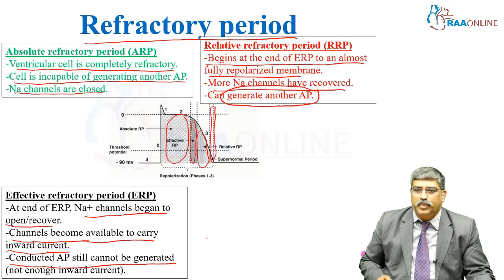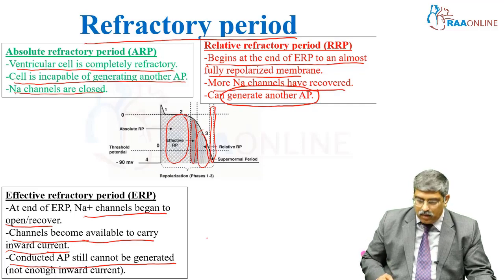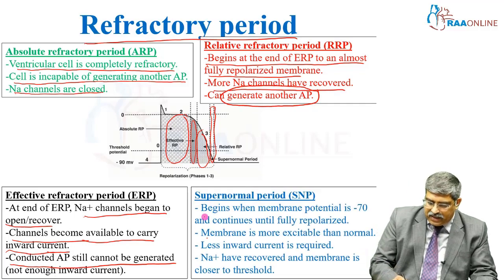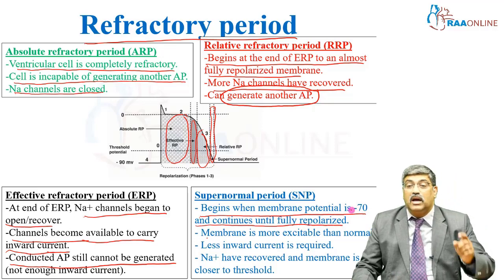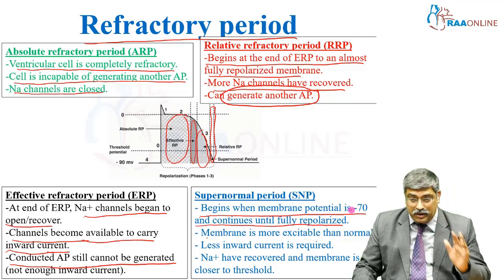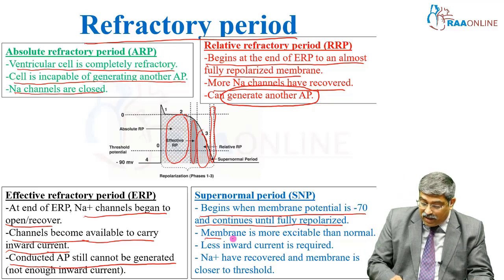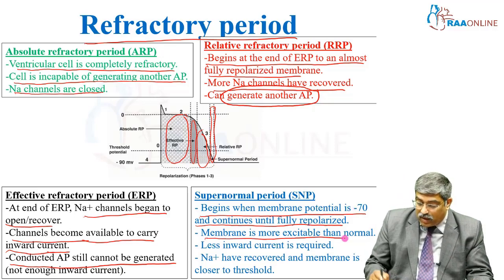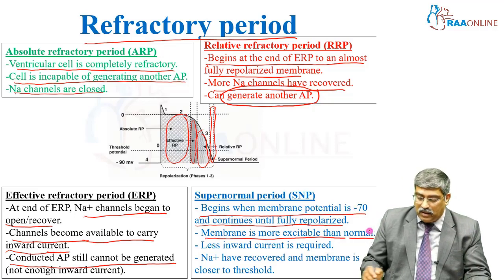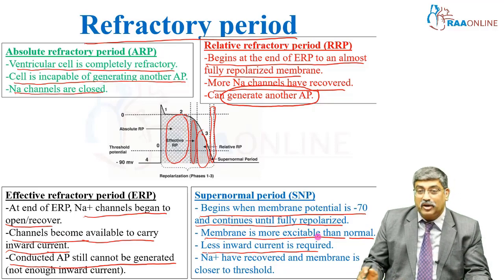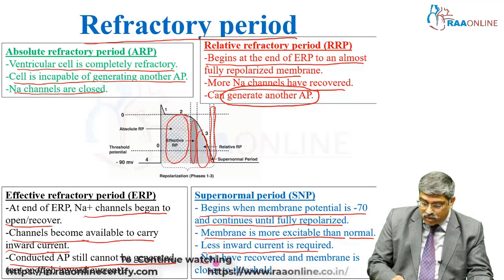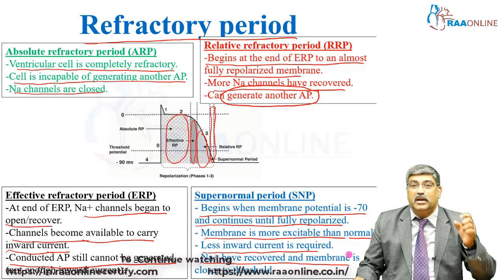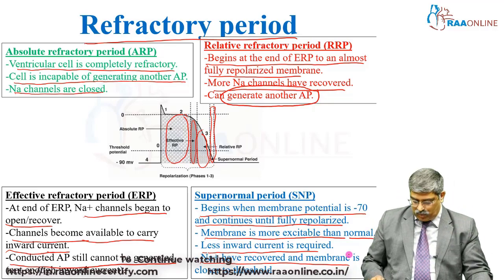Coming to the super normal period, it begins when the membrane potential is less than 70 millivolts and continues until fully repolarized. The membrane is more excitable than normal — less inward current is required to generate an action potential. More sodium channels have recovered and the membrane is closer to threshold.